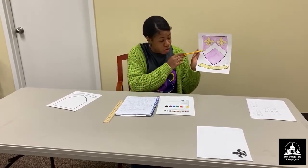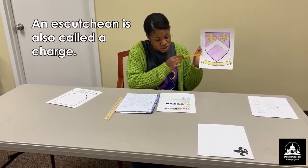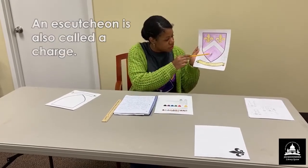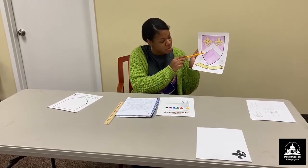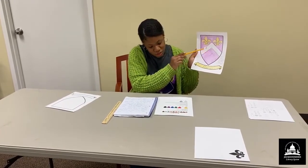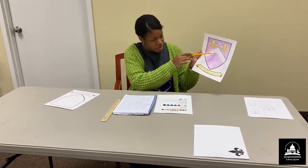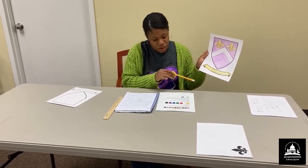So this is a charge. The escutcheon is a charge, and an ordinary, that's a division of colors. So we have our Chevron here, that can count as an ordinary, because it's dividing this charge.